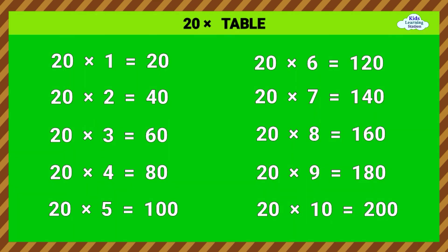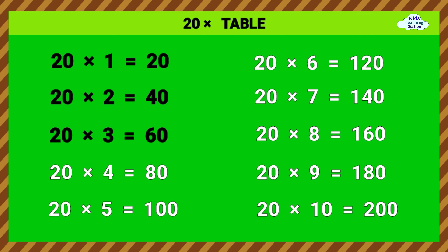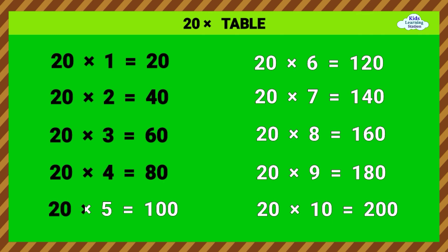Twenty times table. 20 times 1 equals 20. 20 times 2 equals 40. 20 times 3 equals 60. 20 times 4 equals 80. 20 times 5 equals 100.